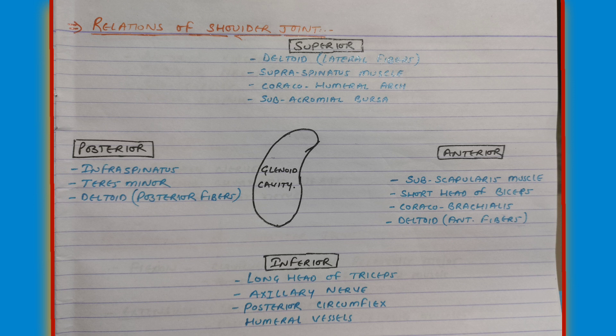In the relations diagram of the shoulder joint, we have the glenoid cavity in the center. The superior relations are the deltoid lateral fiber, supraspinatus muscle, coracoacromial arch, and subacromial bursa. Anteriorly it is related to the subscapularis muscle, short head of biceps, coracobrachialis, and deltoid. Inferiorly it is related to the long head of triceps, axillary nerve, and posterior circumflex humeral vessels. Posteriorly it is related to infraspinatus, teres minor muscle, and the posterior fiber of deltoid.